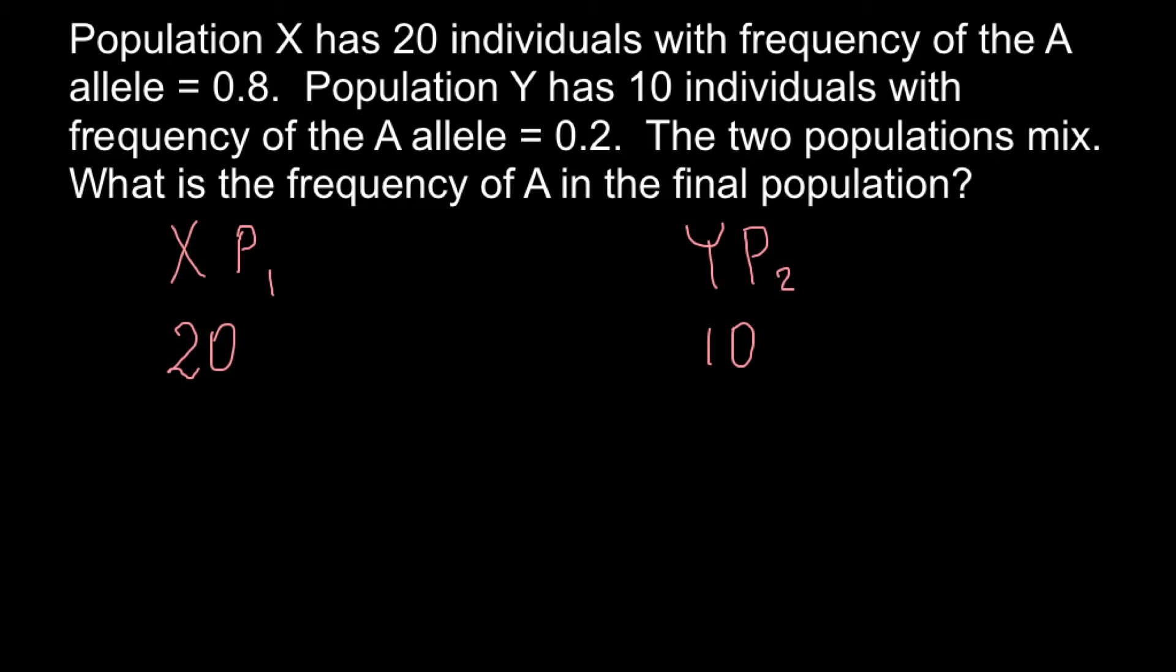And also, in these populations, because this is diploid organism, that means that we have double number of the alleles. So we have to multiply by 2. So here we have 40 alleles. And here, when we double by 2, so we would have 20 alleles.